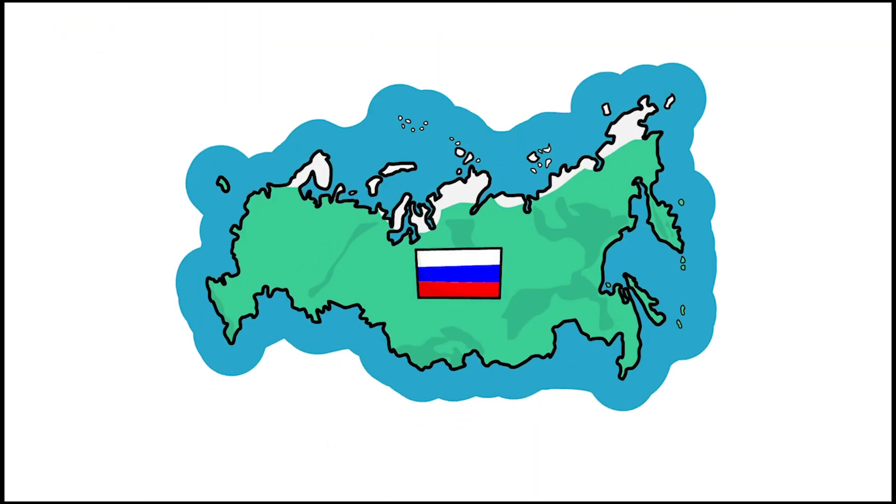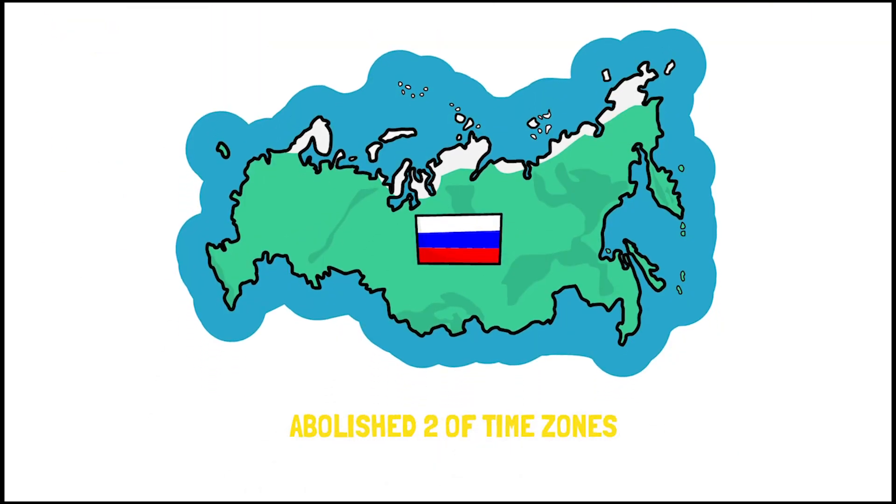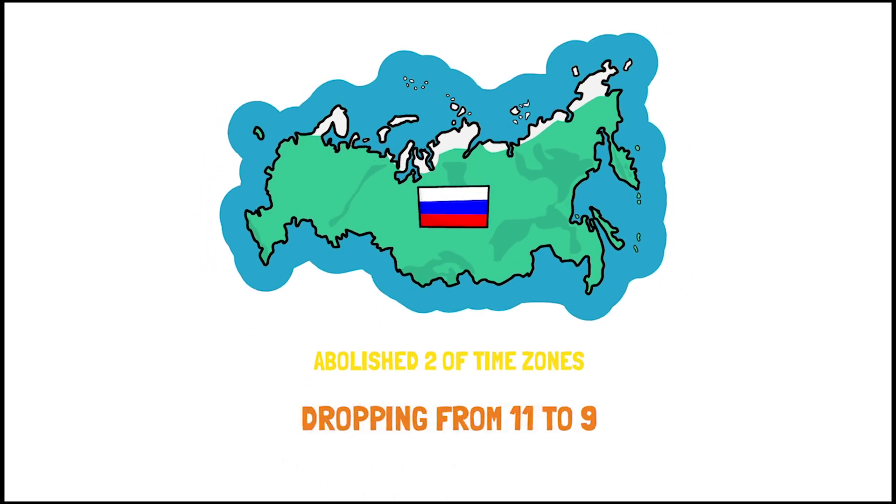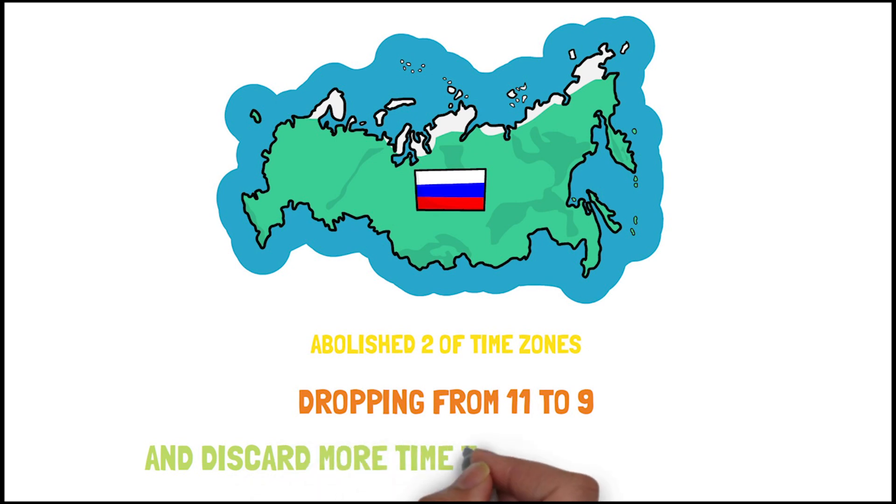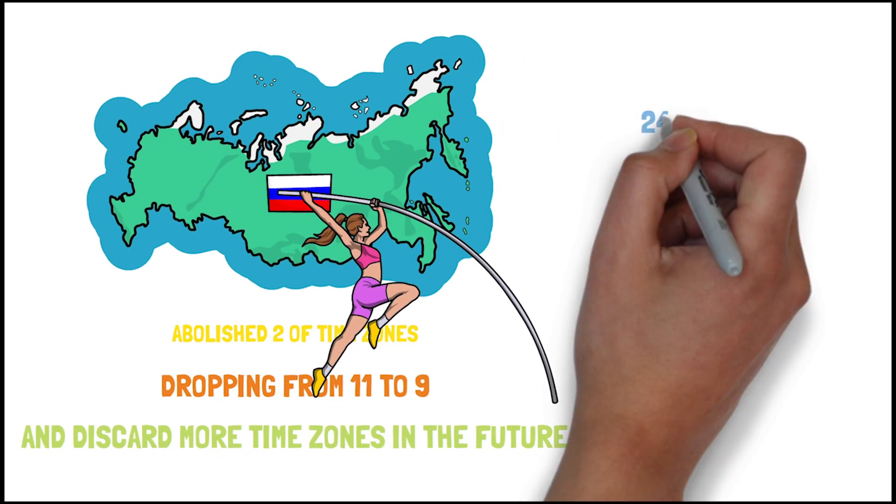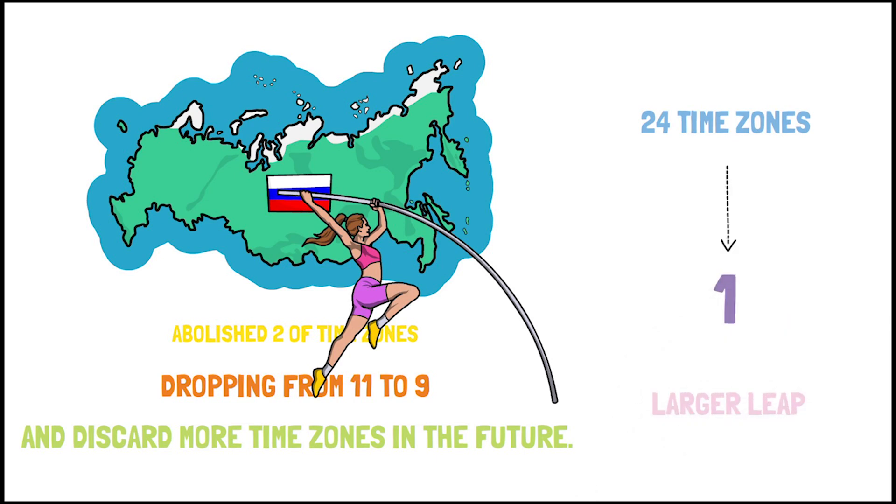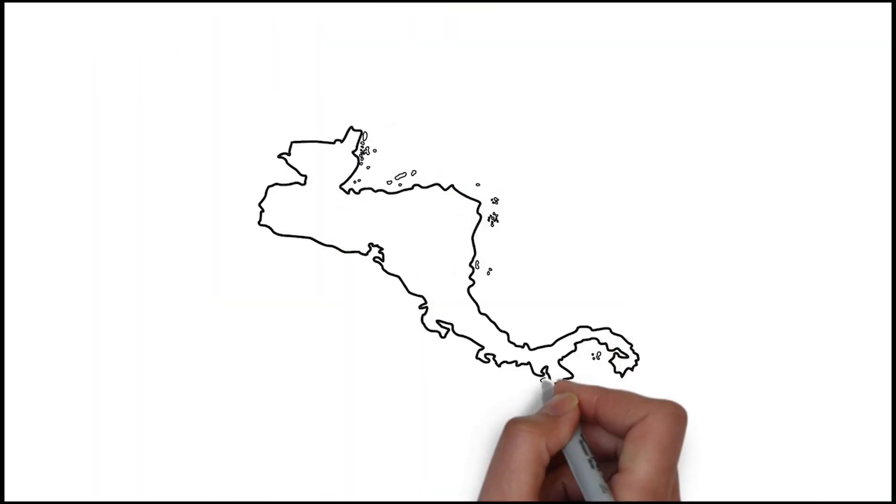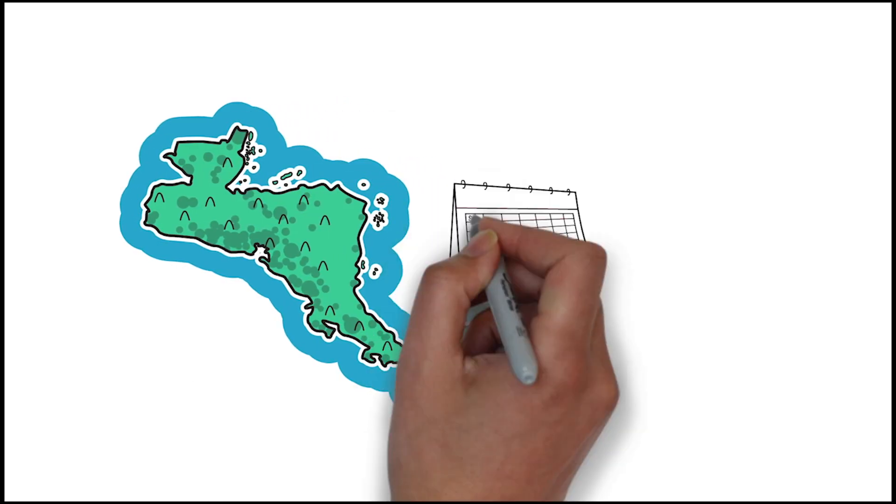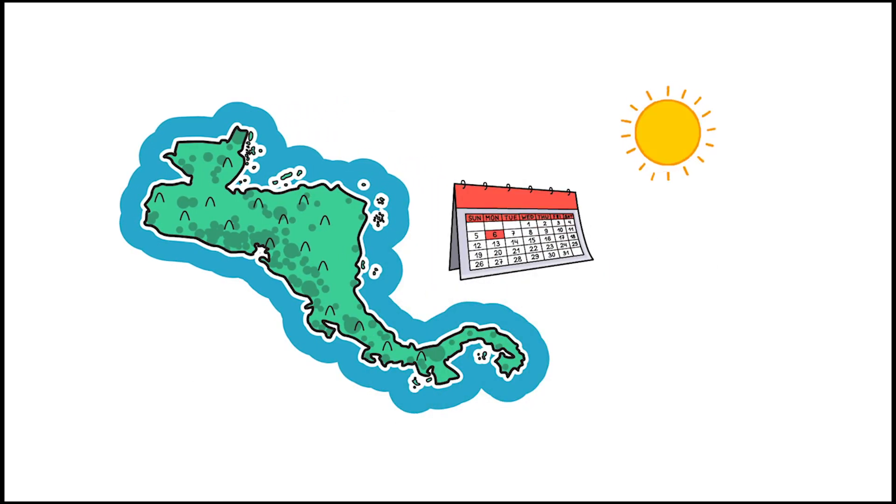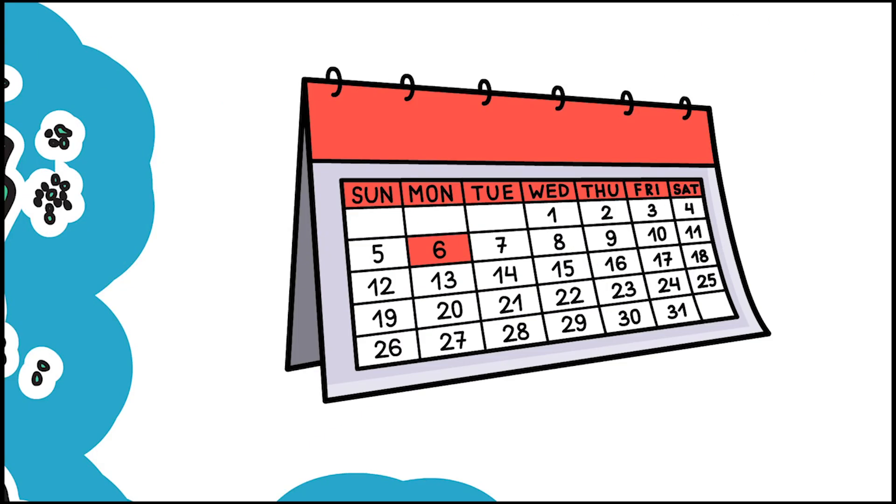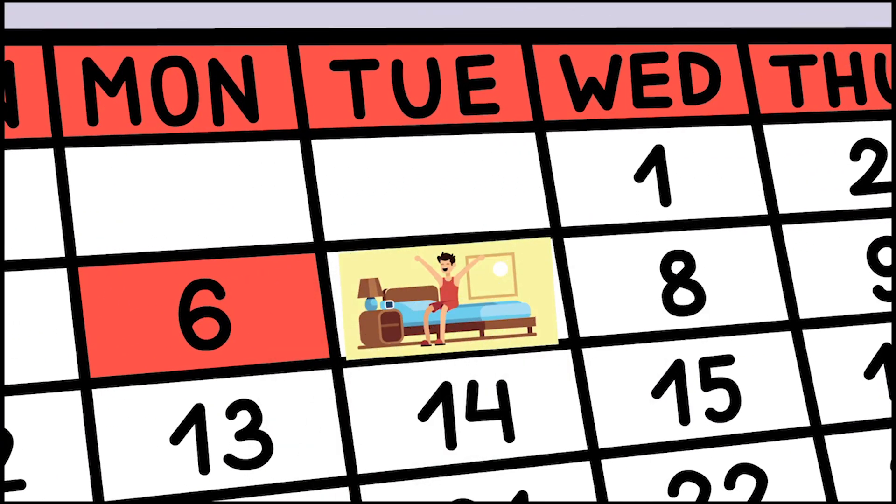Even Russia abolished two of its time zones, dropping the number from 11 to 9, and even suggested that they may discard more time zones in the future. But jumping from 24 time zones to one would be a much larger leap. On some islands in the Pacific, the date would change with the sun high in the sky. People would wake up on Tuesday and go to bed on Wednesday.